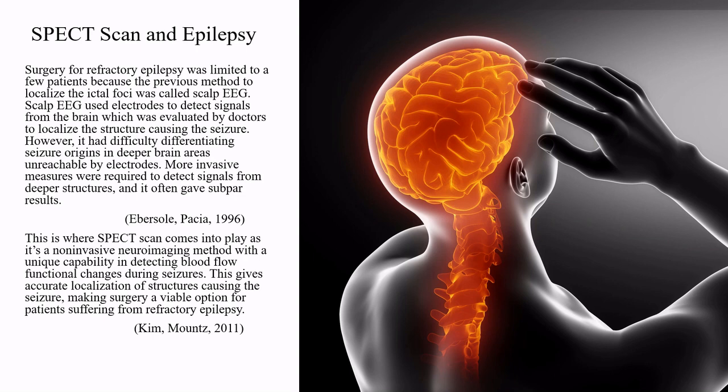More invasive measures were required to detect signals from deeper brain structures and often gave subpar results. This is where SPECT scan comes into play, as it is a non-invasive neuroimaging method with a unique capability in detecting blood flow functional changes during seizures. This gives accurate localization of structures causing the seizure, making surgery a viable option for patients with refractory epilepsy.